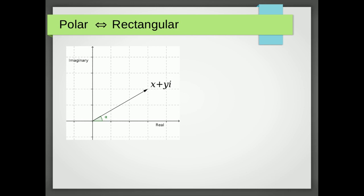So what's the connection between rectangular and polar? I've drawn this diagram here. We've got the point x and y marked, or the complex number x plus yi, and we've got the vector joining the origin to that point. I've also marked the angle. For polar coordinates we need the length of that line first of all — that's just Pythagoras' theorem: the square root of x squared plus y squared. In polar coordinates we call that r.